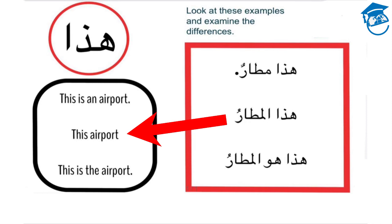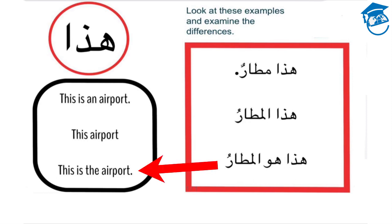In the second example, we've added an alif-lam in between Hadha and the noun: Hadha El-Mataru. This is no longer a full sentence; it's actually just a phrase. You'll notice that El-Matar loses nunation and only takes one vowel marker at its end because it's definite. In the third example, we've added Hua, the word for 'he' or 'it,' into the mix. Hadha Hua El-Mataru means 'this is the airport.' Again, it becomes a full sentence.